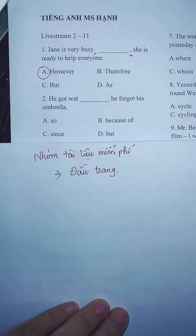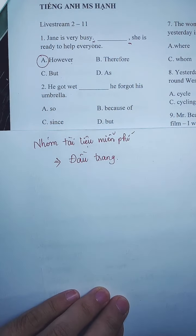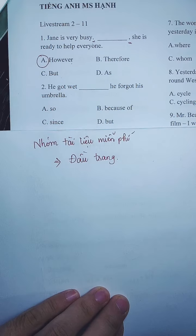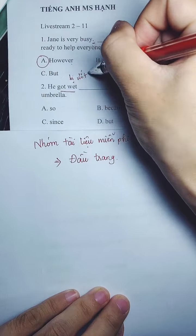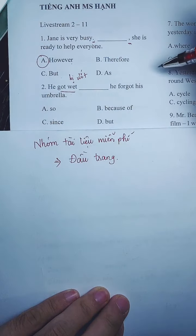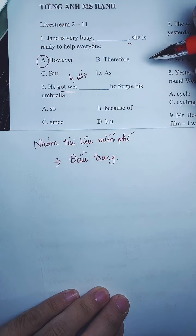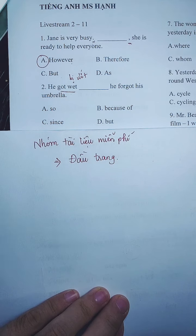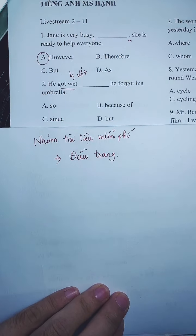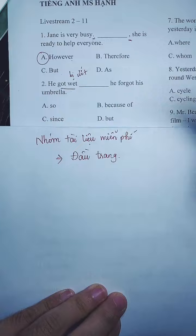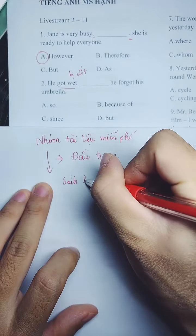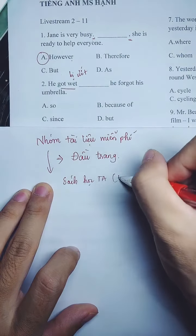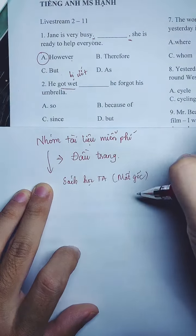Qua câu 2, liên từ câu 2 sẽ là gì? Mình sẽ phải hiểu nghĩa: 'He got wet' — anh ta bị ướt — rồi anh ta quên cái ô. Vậy chỗ này mình điền gì? Có bạn chọn B. Bạn nào muốn xem những buổi live cũ thì vào nhóm tài liệu miễn phí. Trong nhóm sẽ có sách học tiếng Anh, đặc biệt cho những bạn mất gốc cần xem lại lý thuyết.